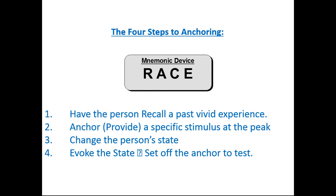Let's have a quick overview of the theory of anchoring. We gave you a mnemonic device called RACE, which represents the four steps to anchoring. We're going to have the client recall a past vivid experience, anchor that client as soon as we see them go into that state, then change their state — break state — and then evoke the state again, which means we're going to be firing the anchor to test it. When we recall the experience, it needs to be vivid and intense for the client.